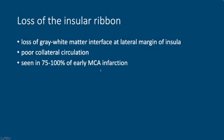Loss of the insular ribbon is again an important early sign of MCA territory infarct. It's basically the same principle as the obscuration of the lentiform nuclei, just involving the cortex. What happens is we lose the gray-white matter interface at the lateral margin of the insula. The lateral margin of the insula has poor collateral circulation.